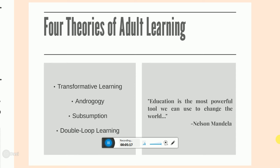The final theory to be discussed in regards to adult learning is double-loop learning. This theory relates to solving complex problems and changing the values and assumptions of the topic. Educators use these theories, and others, to determine teaching strategies that will best suit a class containing adult learners.